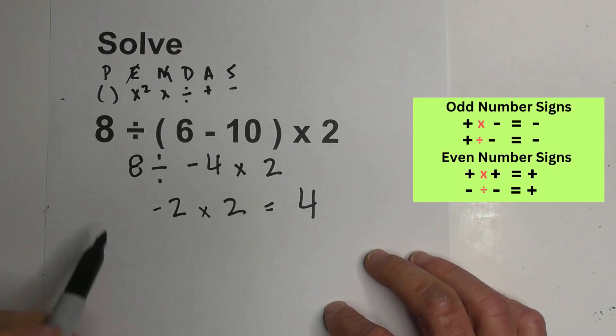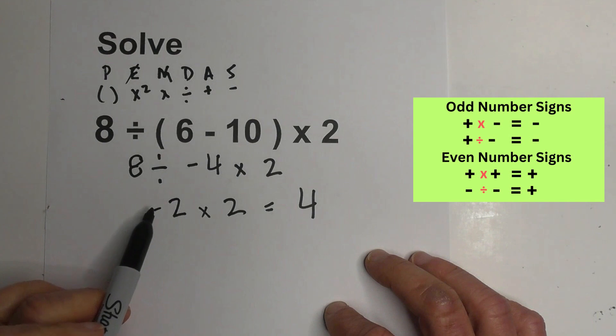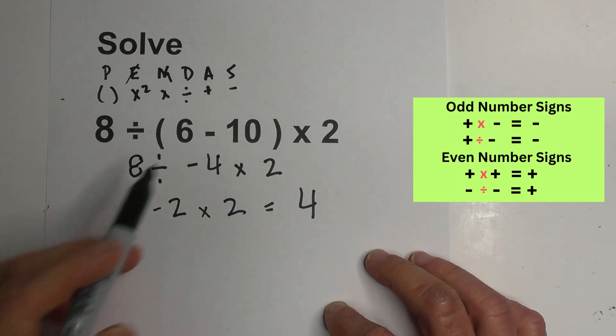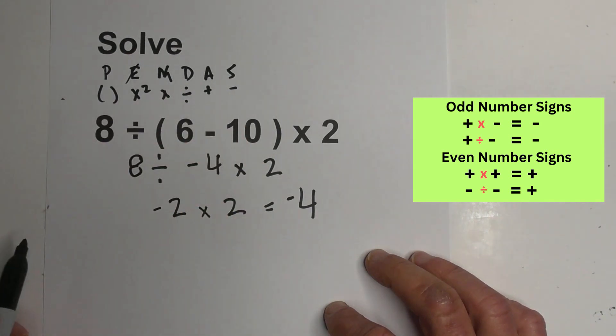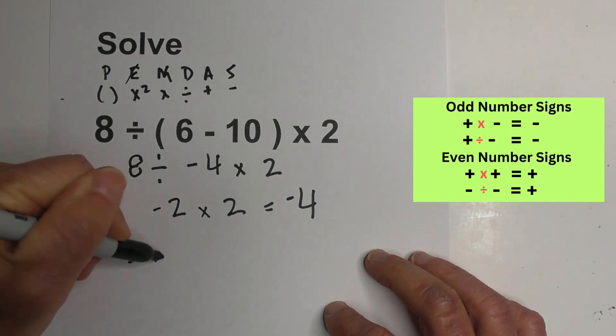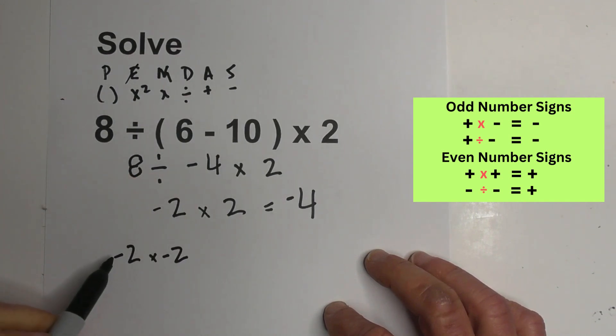Well, there's a couple of ways you can look at it. Whenever you have an odd number of negative signs, when you multiply or divide, it's always negative. And if you had a positive number, like it was negative 2 times negative 2, you have a positive number.